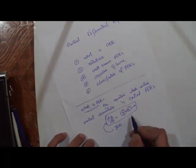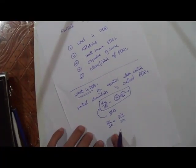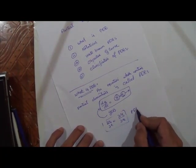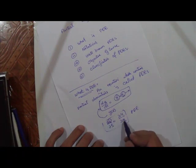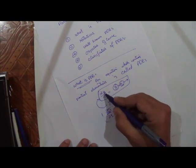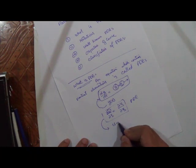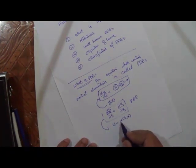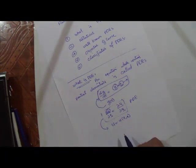In partial differential equations, the independent variable must be 2, 3, 4, or several variables. For example, ∂u/∂t = ∂u/∂x. This is a typical partial differential equation because there are two independent variables t and x, and the dependent variable u depends on both. The solution will be u = u(t, x), meaning the quantity u depends on t and x. Once found, substituting this solution into the equation results in an identity.